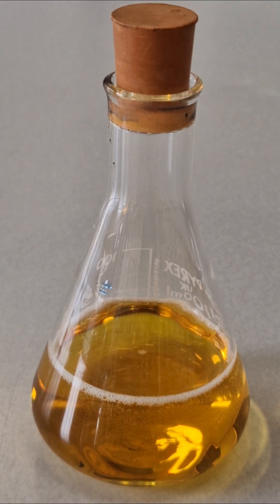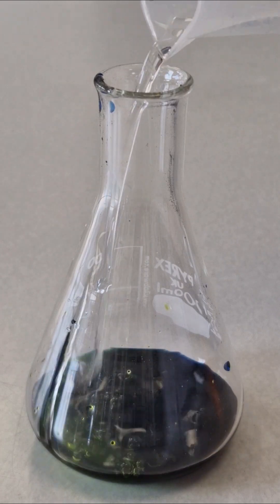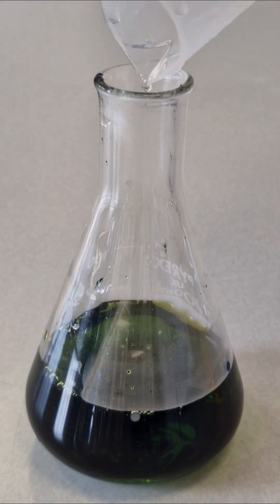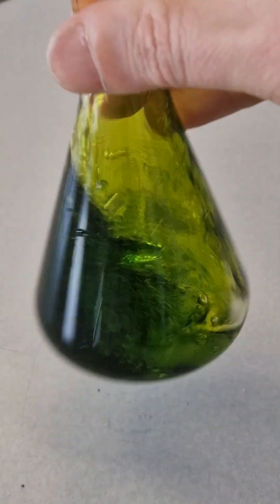Let me show you how to make this solution. Start with a solution of the indicator indigo carmine. Into this we add warm sodium hydroxide alkali solution. We then shake the solution and you can see a green colour has appeared.